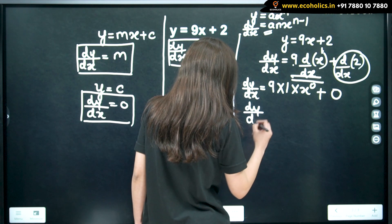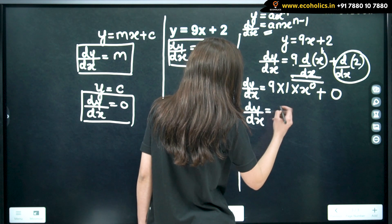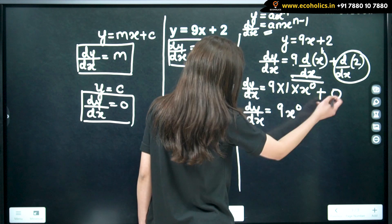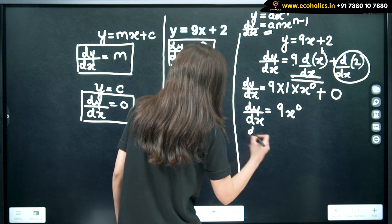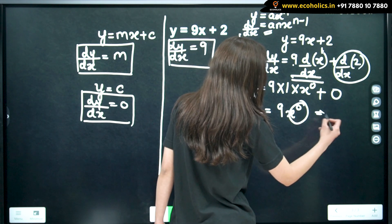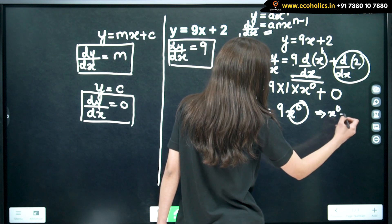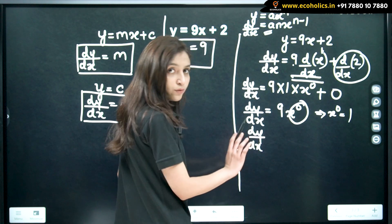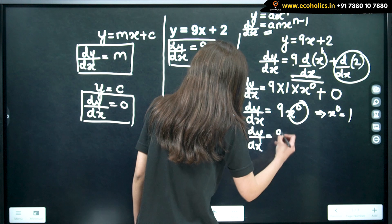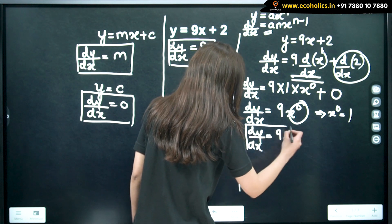dy by dx is equal to 9x raise to 0 and this is 0. Now, dy by dx is x raise to 0 is equal to 1. Basic rule of maths. Therefore dy by dx becomes equal to 9.